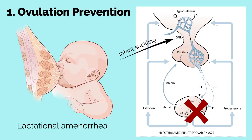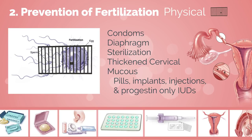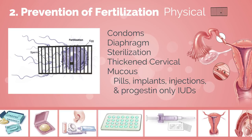Ovarian suppression can be inconsistent with lactation. The second major category includes methods which prevent fertilization — each of the approximately 60 million sperm released per ejaculate must be kept away from the ovulated oocyte. These methods can be considered as physical, chemical, or temporal barriers. Physical barriers consist of condoms (both male and female), diaphragms, male and female sterilization, as well as thickened cervical mucus caused by progesterone-only methods such as pills, implants, injections, and progestin-only IUDs.